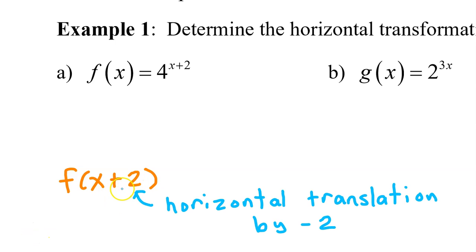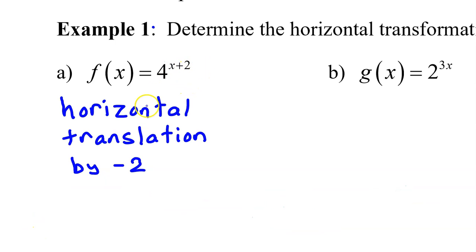So a plus 2 in this position means a horizontal translation by negative 2. For an exponential function, being inside the function means being in the exponent. So having x plus 2 for the exponent means a horizontal translation by negative 2.